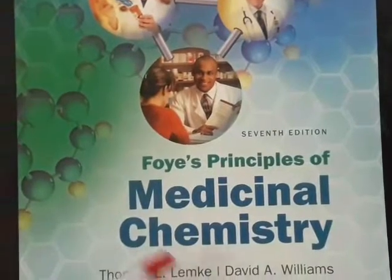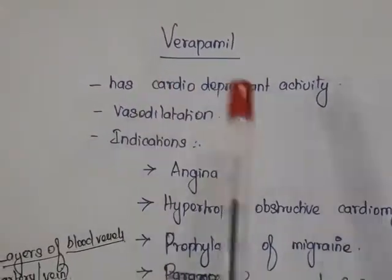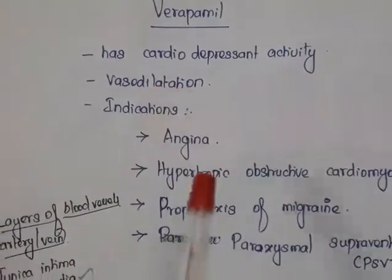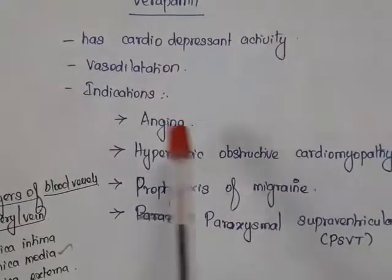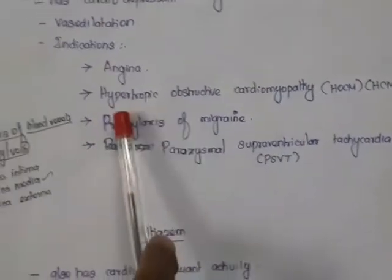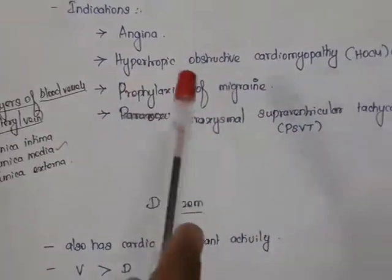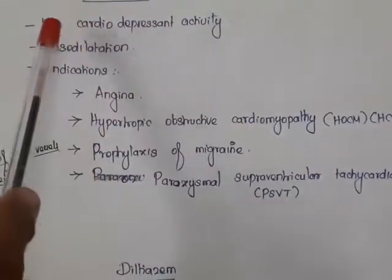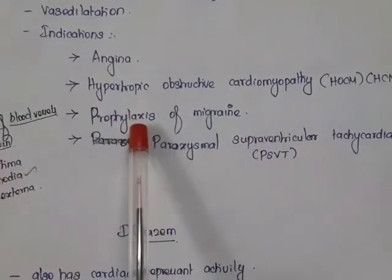Verapamil has the maximum depressant action on the heart — that is, it has maximum cardio-depressant activity — and it also causes vasodilatation. Because of its cardio-depressant action, it is used for the treatment of angina, hypertrophic obstructive cardiomyopathy (where cardiac activity must be reduced to prevent obstruction), prophylaxis of migraine, and paroxysmal supraventricular tachycardia.